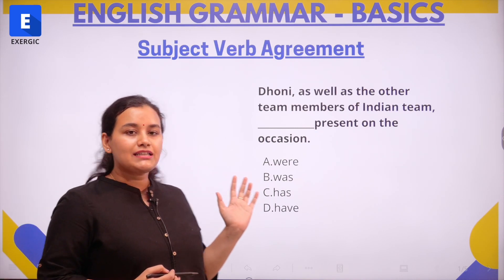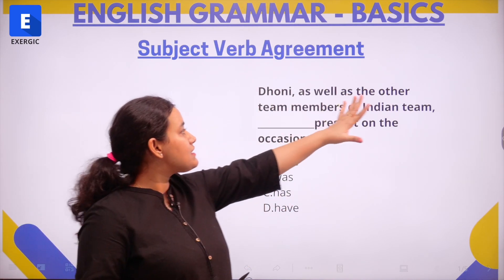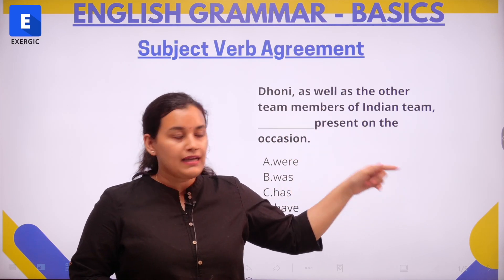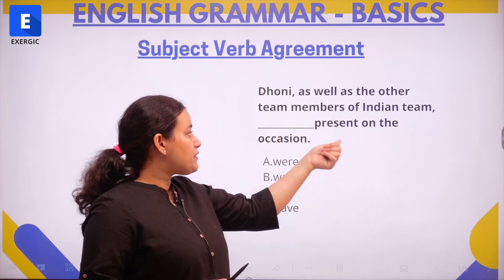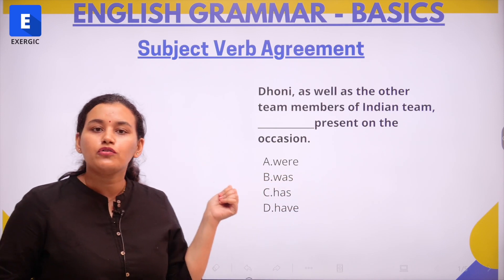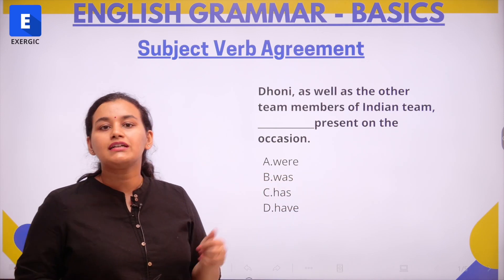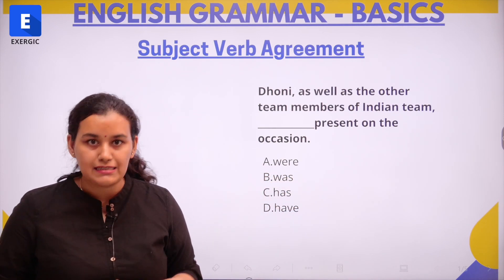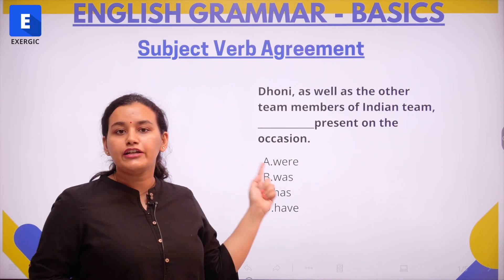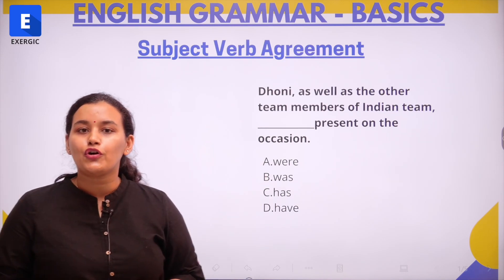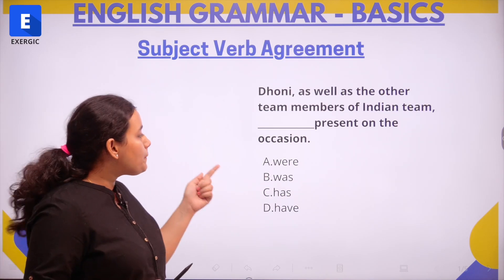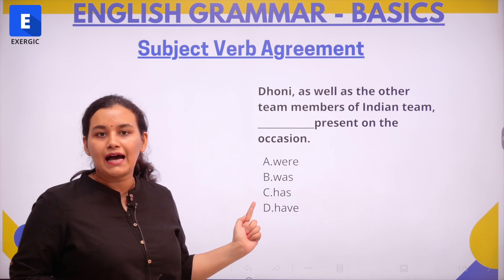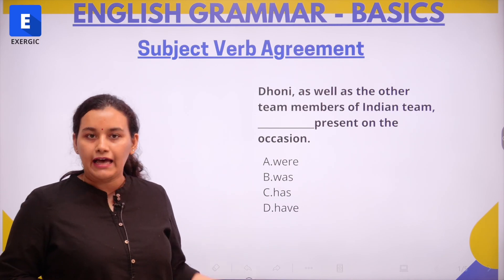So let us look at this sentence: Dhoni as well as the other team members of the Indian team dash present on the occasion. We want to find out the correct form of the verb. The options are where, was, has, and have.